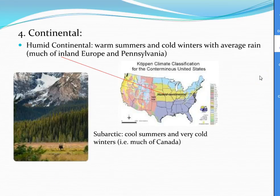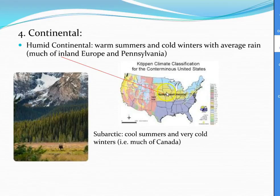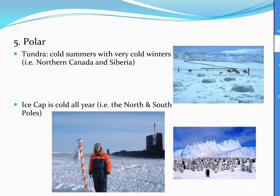In the continental zone, which covers much of inland Europe and Pennsylvania, you'll see warm summers and cold winters. One subcategory of the continental zone is humid continental, seen here in the United States in the Midwest zone. Sub-arctic regions include much of Canada. Now we see the polar regions — pretty much ice and snow.